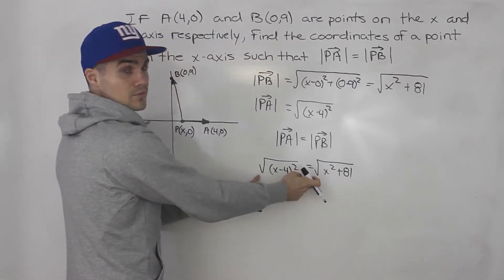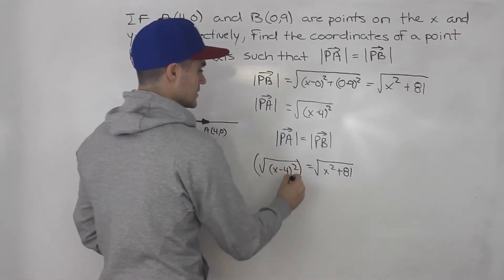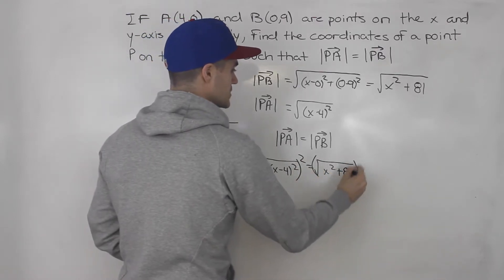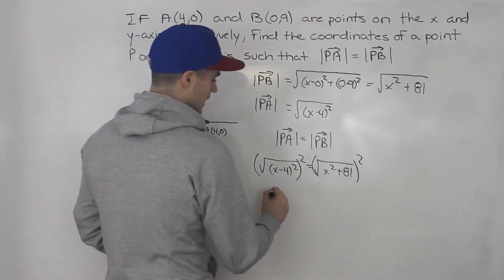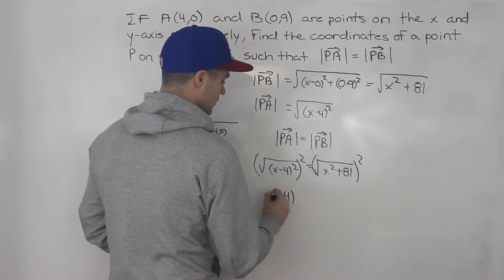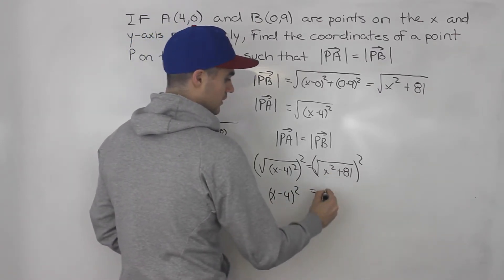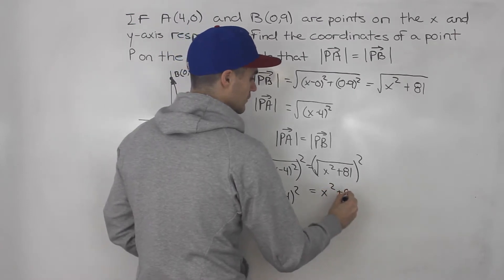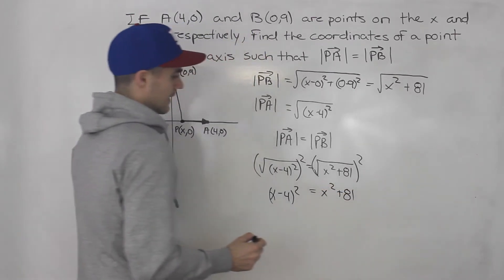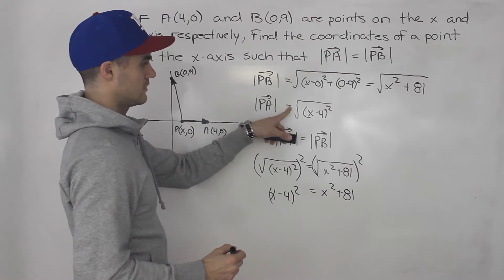Notice we have a square root on both sides. So we can technically just square both sides, get rid of that square root. We'll have (x - 4)² left over here. And over here, we'll have x² + 81 left.